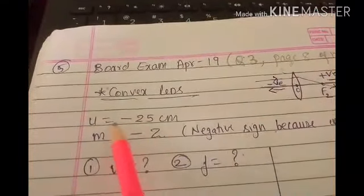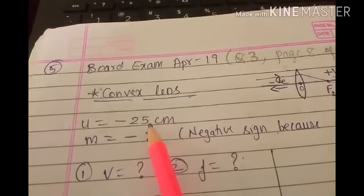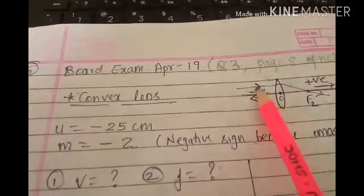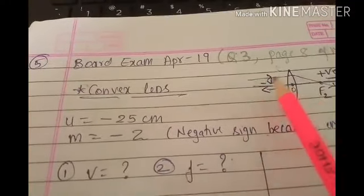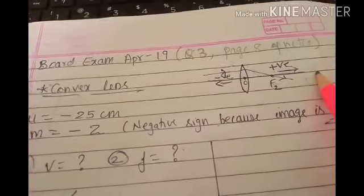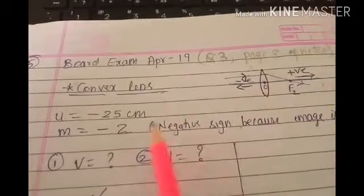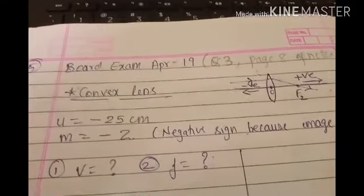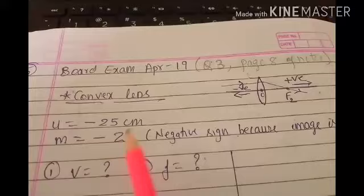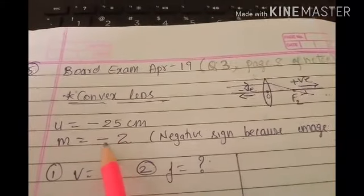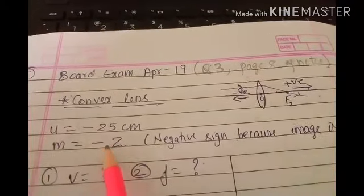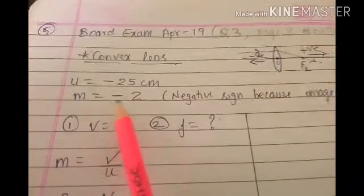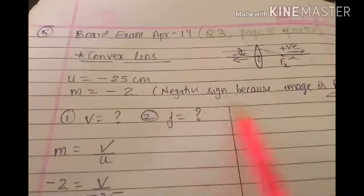The object produces a double-sized real image on the other side of the lens. Double size means magnification is 2, but why minus sign? Because it's a real image, and for real images the magnification is negative. Hence M equals minus 2, this is the most important thing here.